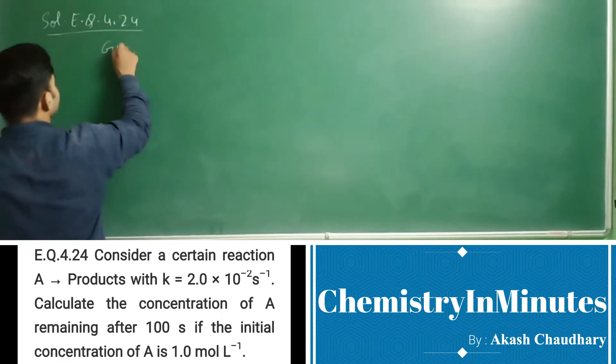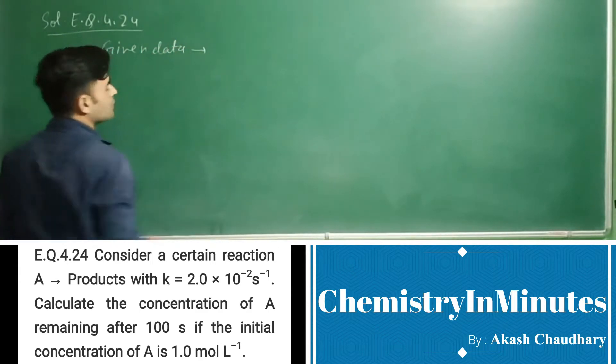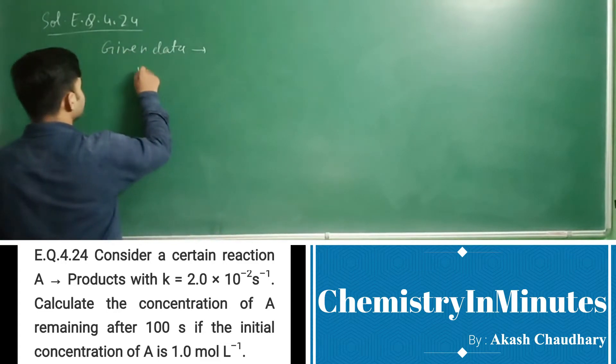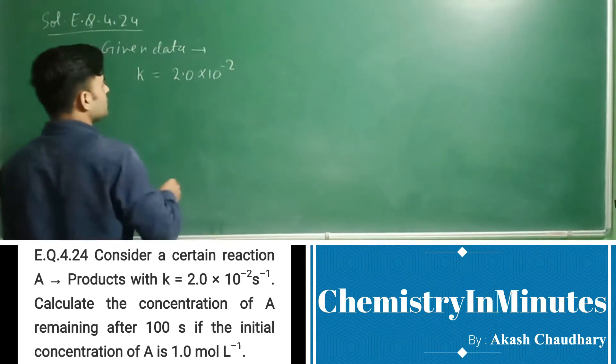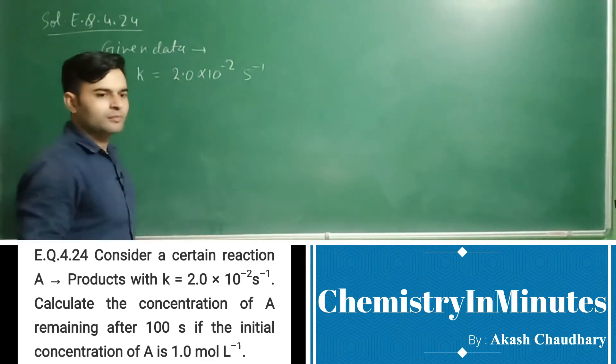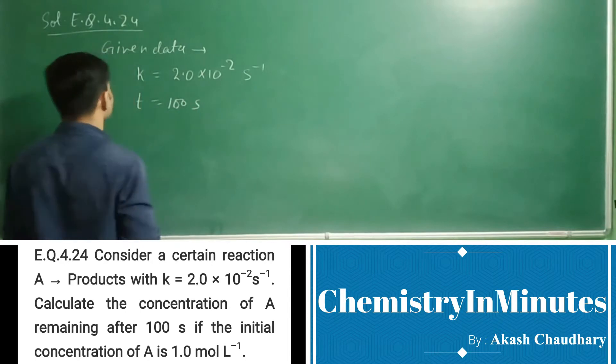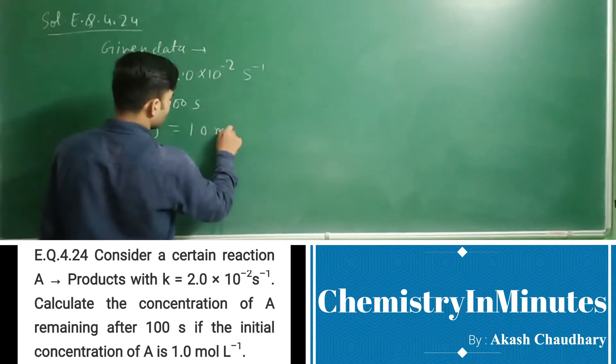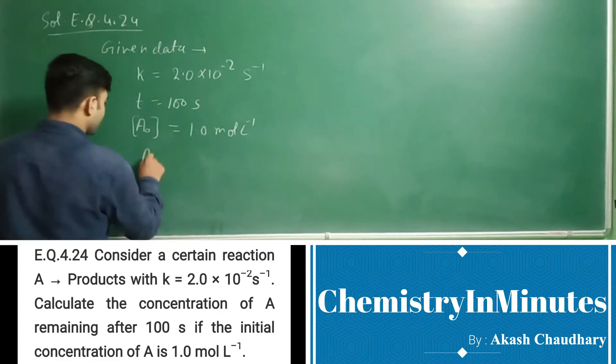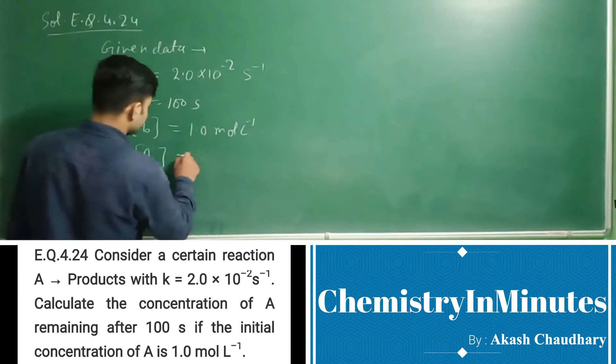First we are writing given data. Rate constant k = 2.0 × 10^-2 s^-1, time t = 100 sec, and [A]₀ initial concentration of A is 1.0 mol per liter. [A]_t, the concentration after 100 seconds, we have to find.